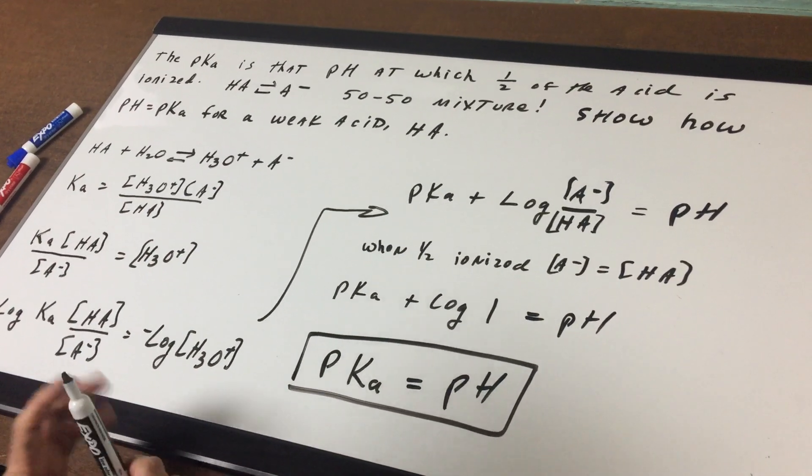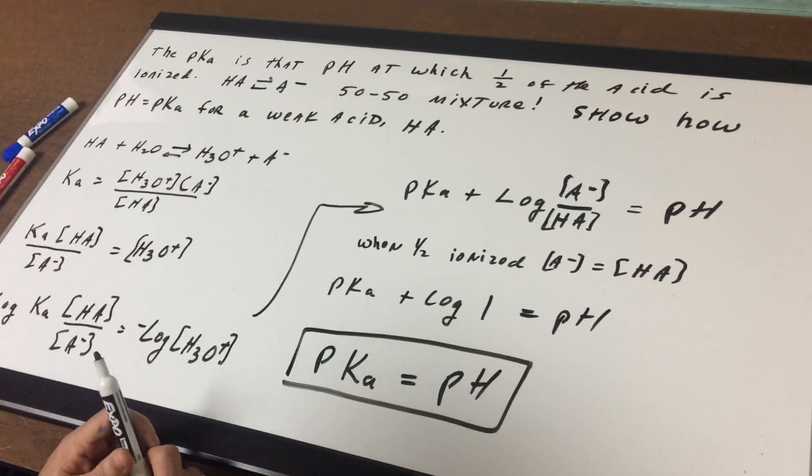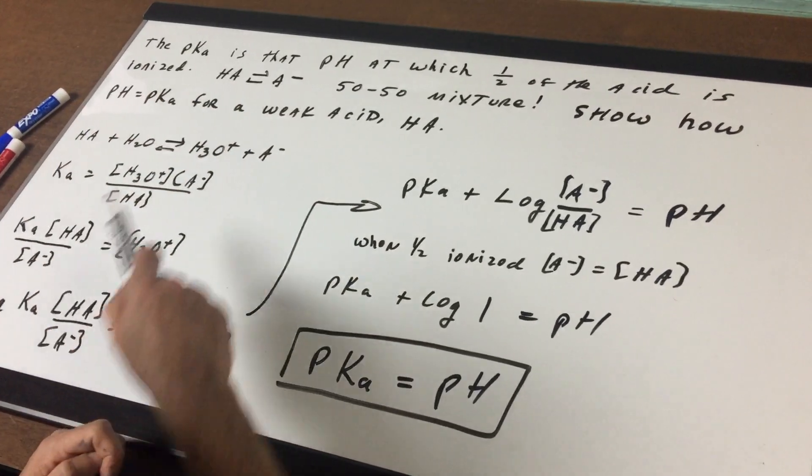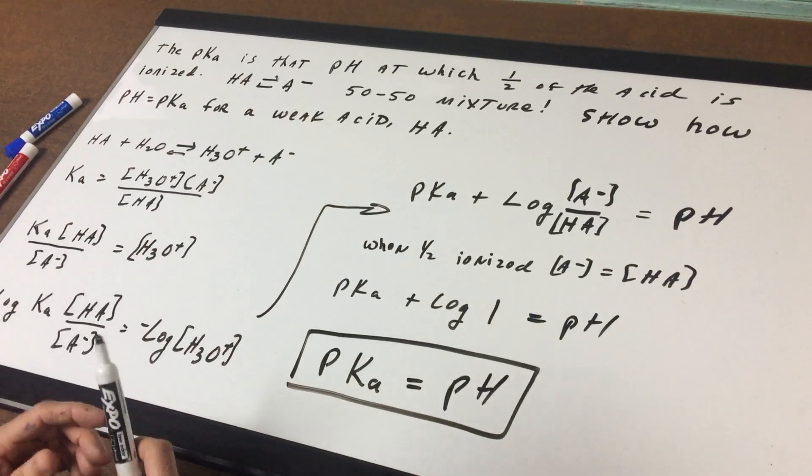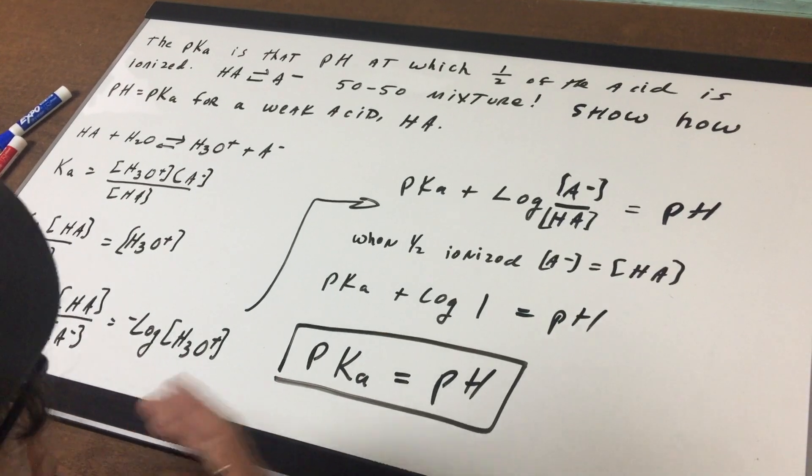It says that the pKa is that pH in which half of an acid is ionized. In other words, 50% is in the HA form and 50% is in the conjugate base form. And if you remember,